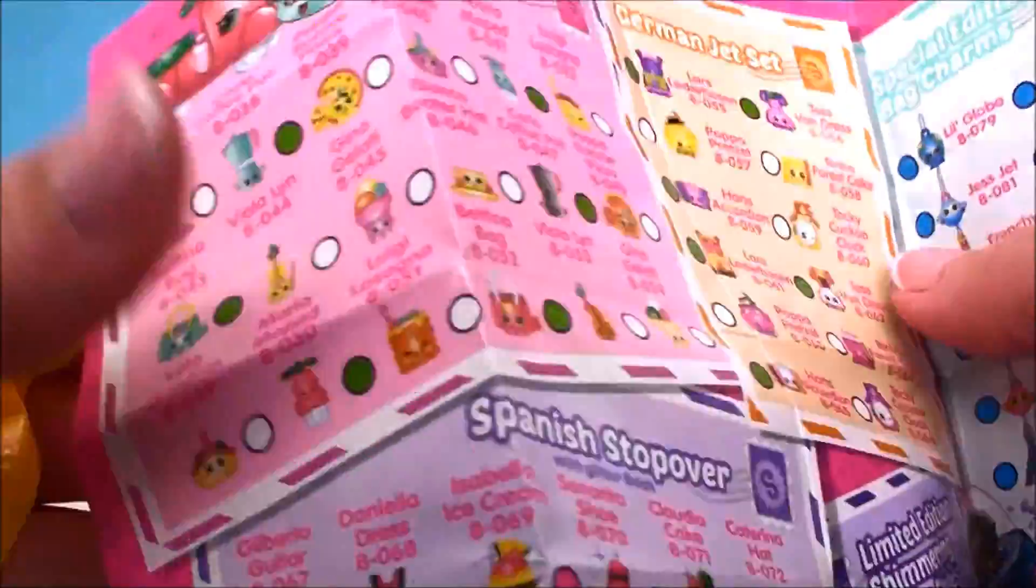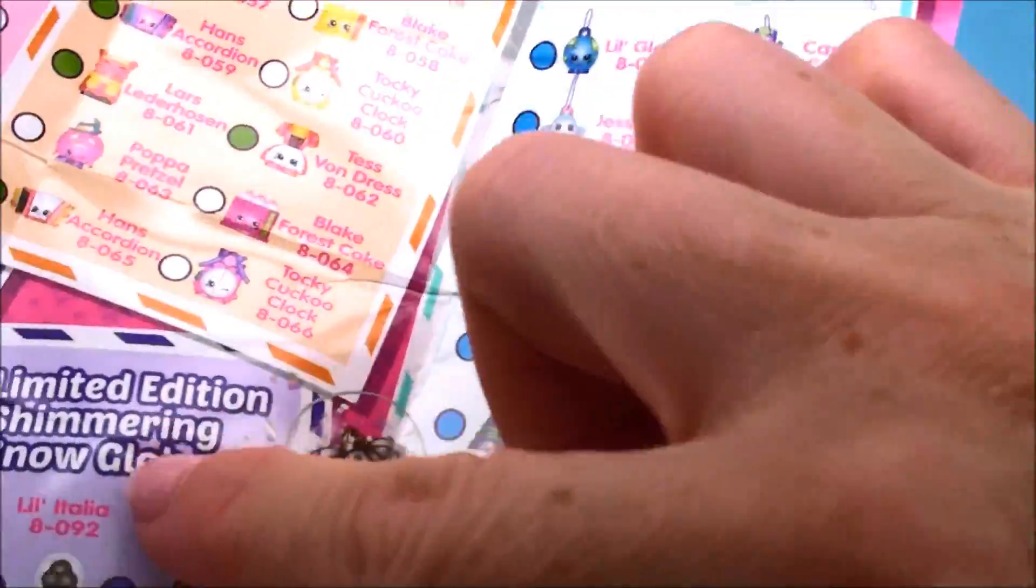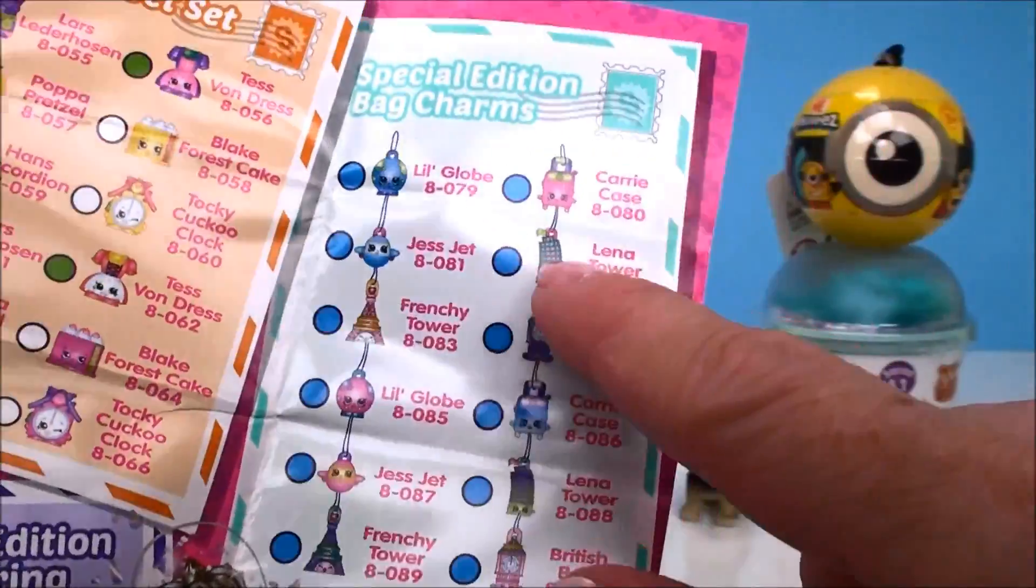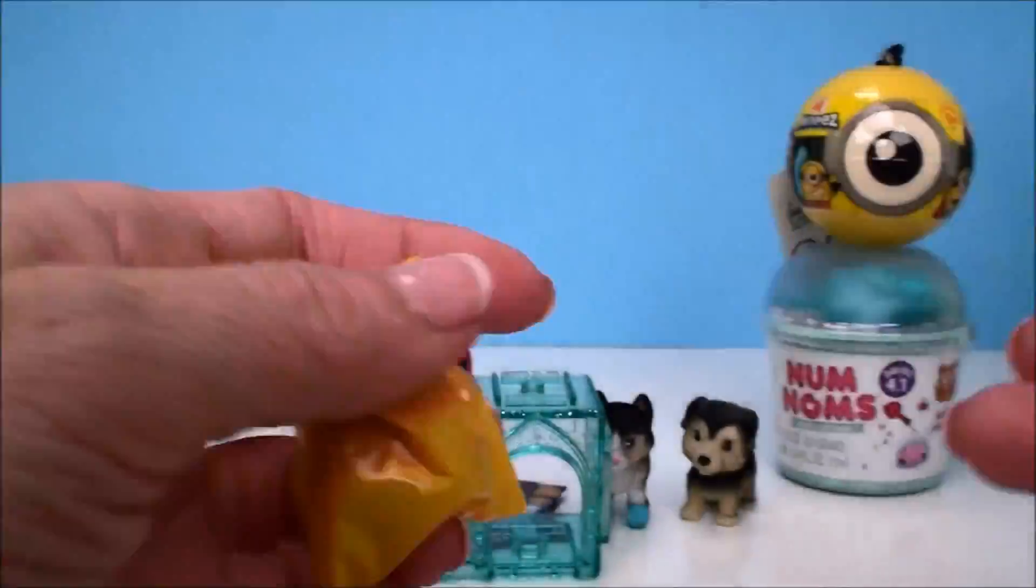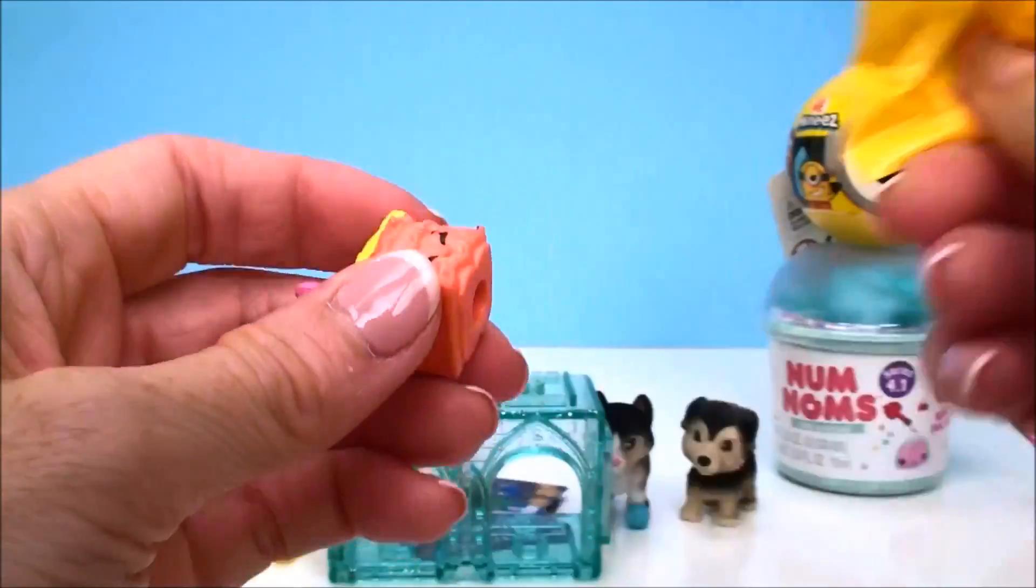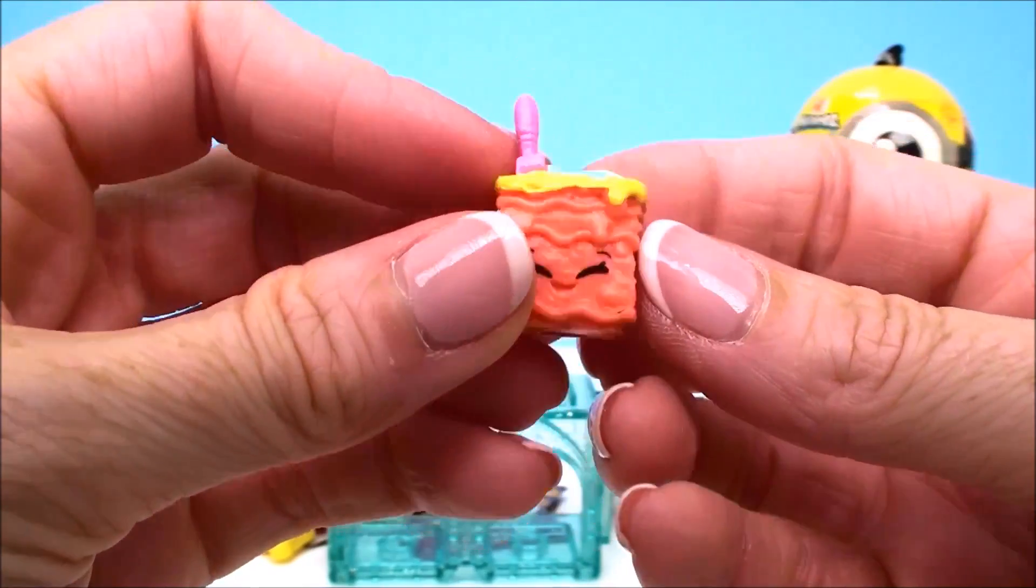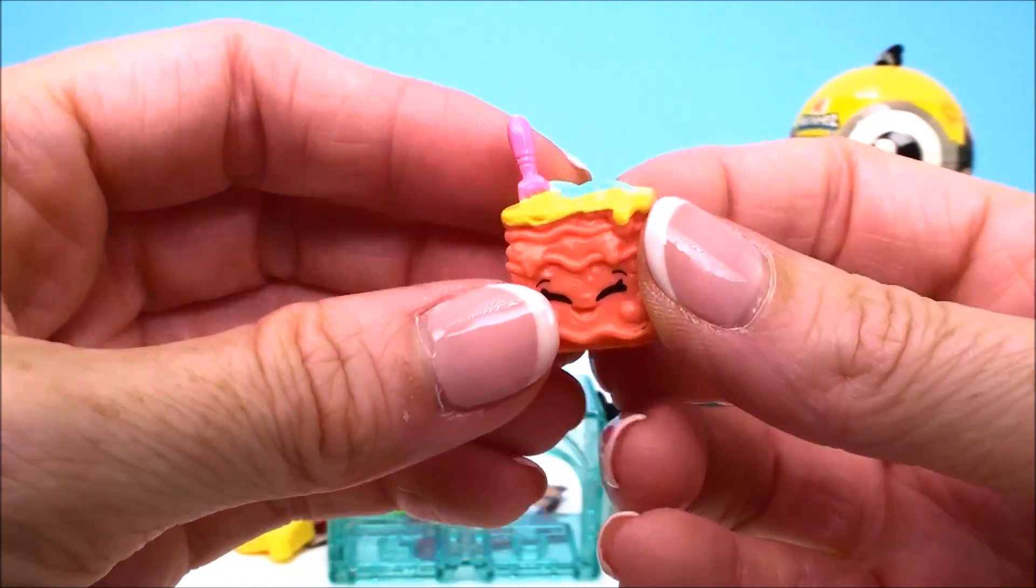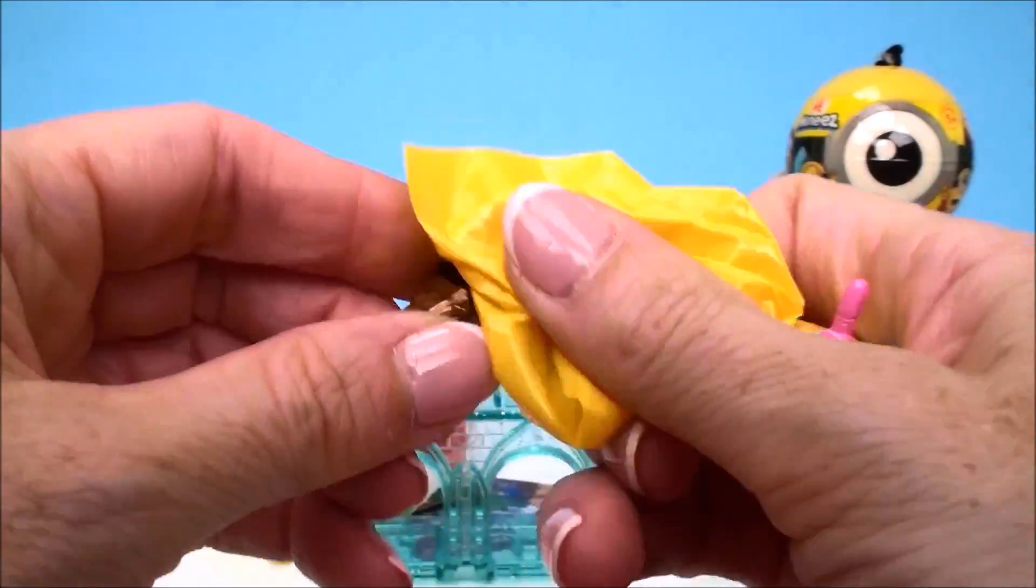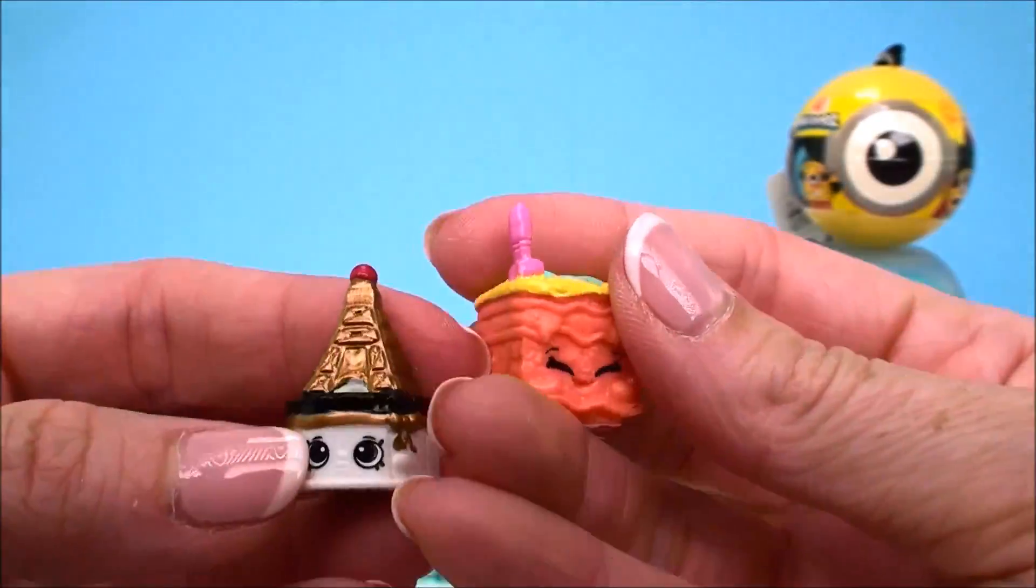And of course there is a Collector's Guide to show you real quick. It has all the different categories. French Adventure, UK Holiday, Italian Tour, Spanish Stopover, the German Jet Set category. Here are the limited edition Shimmering Snow Globes. I've gotten none of those yet. So I'm hoping to get one very soon. And then there's also a special edition Bag Charm. Let's see what we got today. I'm just enjoying this whole new season. I don't even care what I get. I just love that I'm getting new stuff. Okay, this one I have not gotten yet. Super cute. I'm going to open both of them and then we'll check out which category they're from and if they're common or rare or ultra rare.